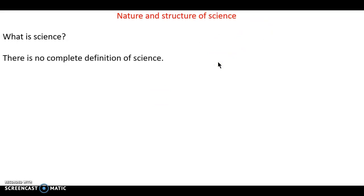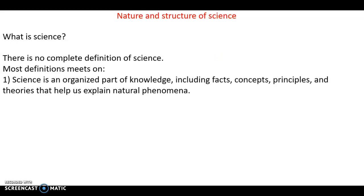There is no complete definition of science. I am talking about science meaning natural sciences, faculty of science. There is no complete definition of science. Most definitions relate to each other by this first point: science is an organized part of knowledge, including facts, concepts, principles, and theories that help us explain natural phenomena.